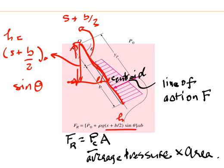So this explains why the formula for the average pressure is given by rho G S plus B over 2 times sine theta, which is H, the equivalent of H for the depth from the surface to the centroid. And the resultant force is simply the average pressure times the area.